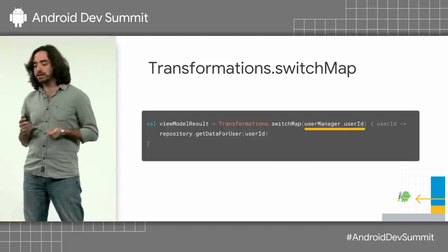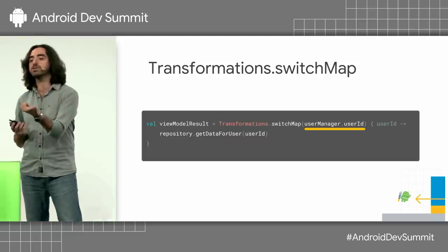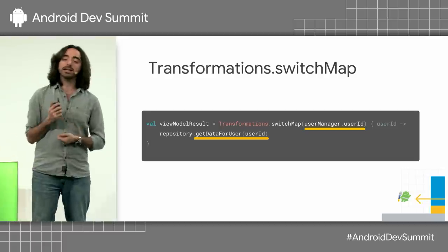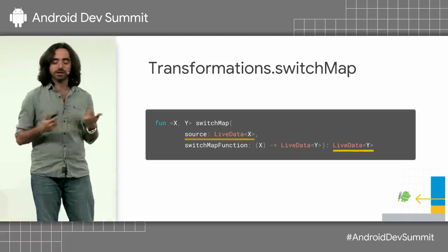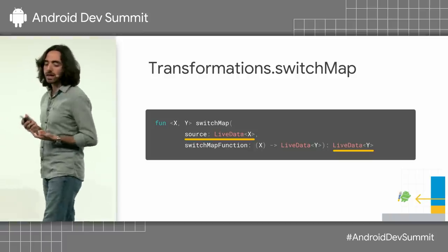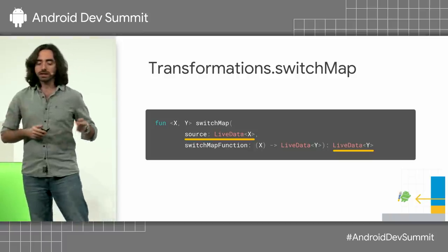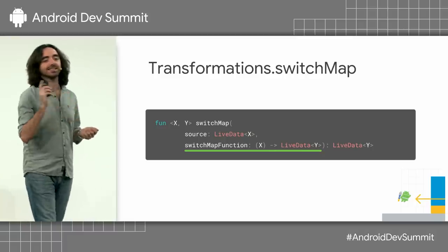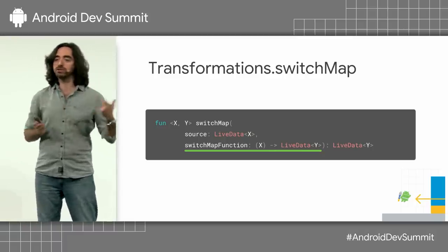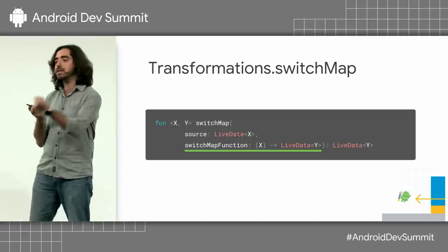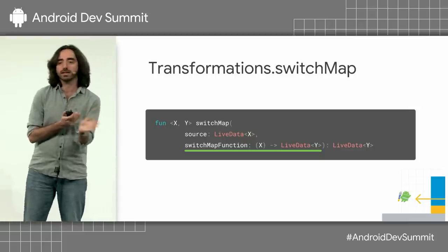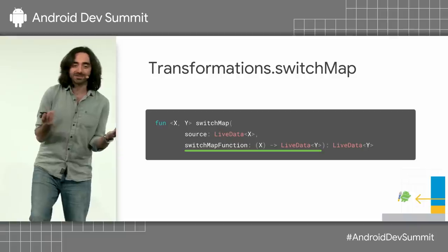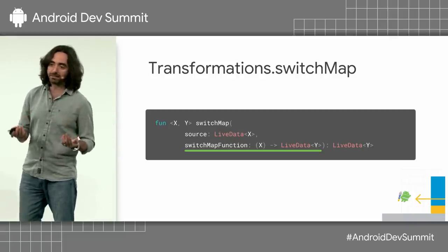If you look at that example, we call switchMap and provide the user ID LiveData as the source. And then our function this time returns a LiveData. So the signature looks like this: you have a source, at the end you have a LiveData, and you provide a function that converts the value X to a LiveData. What this technically does is, every time that user ID changes, it calls your function, you give it a new LiveData, it unsubscribes from the previous LiveData you returned and subscribes to the new one. It's like switching tracks — or I think this comes from switchboards. It's completely managed for you and it's still lifecycle-aware, so you get all the benefits of using LiveData.